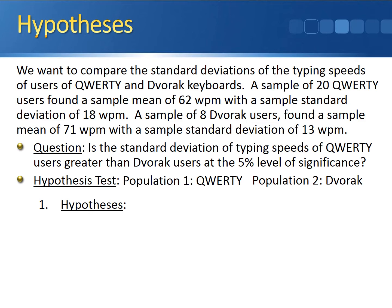We want to know if the variances of the populations are equal, so the null hypothesis is that the variance of the typing speeds of QWERTY users equals the variance of the Dvorak users. Since we suspect the variance of QWERTY users might be larger, the alternative hypothesis is that the variance of the QWERTY users is greater than the variance of the Dvorak users.